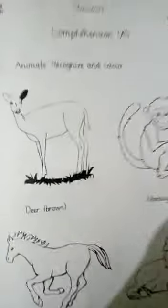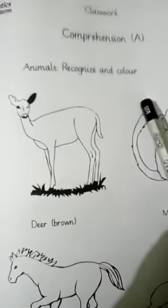Now we will do Comprehension according to the planner, page number 64. Comprehension A: Animals, Recognize and Color.